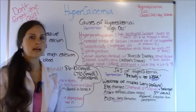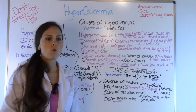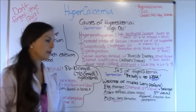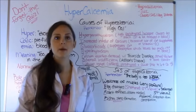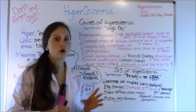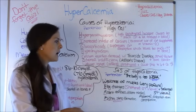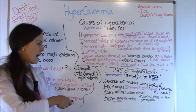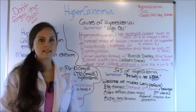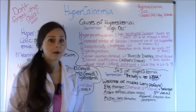They're going to say: patient has a calcium level of 12 — what may you see on an EKG? The answer is shortened QT interval. Remember, in hypocalcemia it's the opposite — they have a prolonged QT interval. You can also see with hypercalcemia a prolonged ST interval. A is for absent reflexes — they won't be hyperactive like in hypocalcemia.